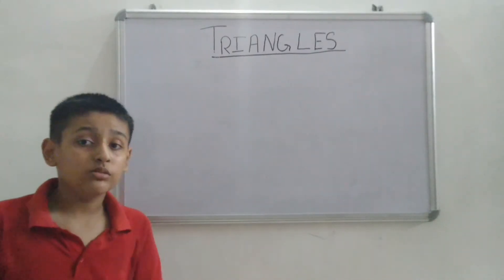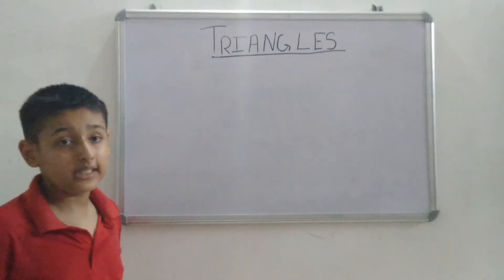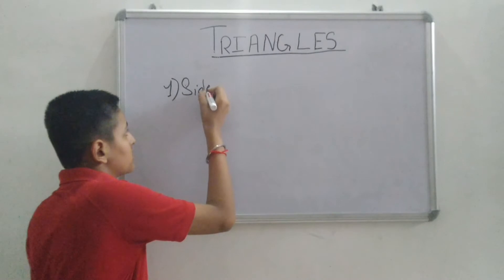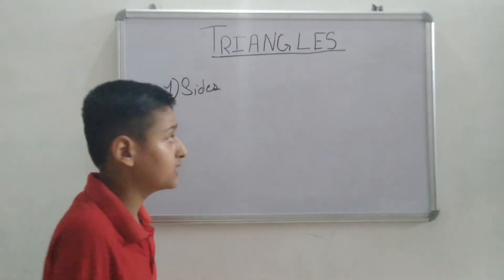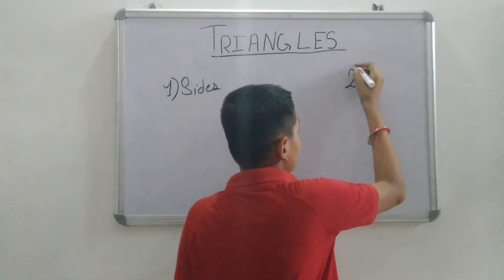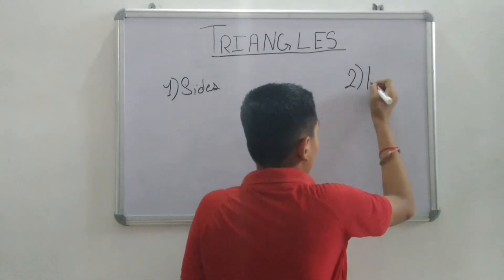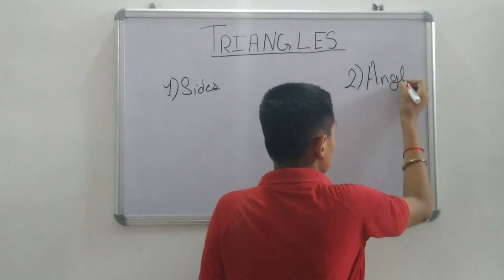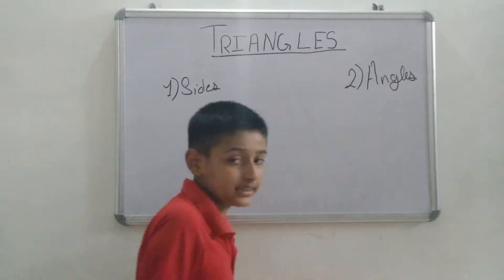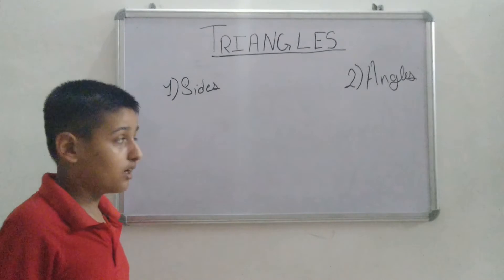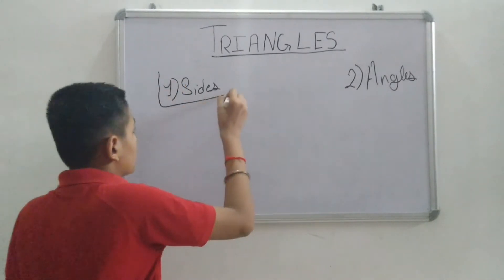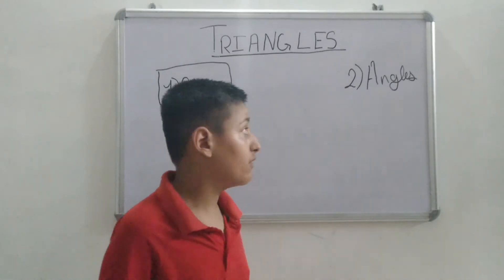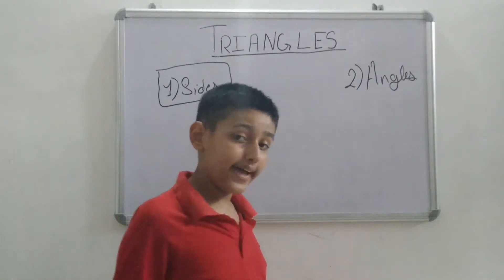There are two types of triangles. First, on the basis of sides, and second on the basis of angles. But in this video, we will learn triangles on the basis of sides. In my next video, we will learn triangles on the basis of angles.